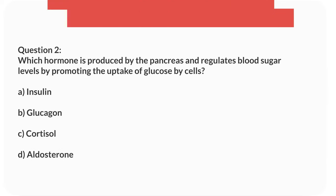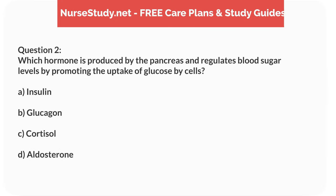Question 2. Which hormone is produced by the pancreas and regulates blood sugar levels by promoting the uptake of glucose by cells? A. Insulin. B. Glucagon. C. Cortisol. D. Aldosterone.